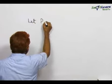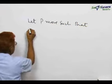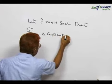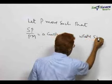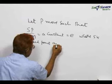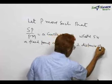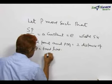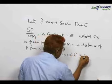Let P move such that SP by PM is equal to a constant denoted by E, where S is a fixed point and PM is the perpendicular distance of P from a fixed line. Then the locus of P is called a conic.